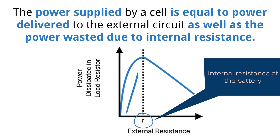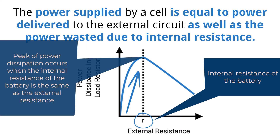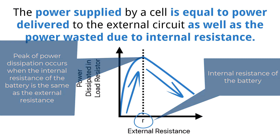This is visualized in a graph: as the load resistance increases, the amount of power dissipated also increases until it reaches a peak. The peak occurs at the same resistance value as the internal resistance of the cell. As the resistance in the circuit continues to increase, the power decreases, which follows our previous understanding of the relationship between power and resistance. When working with electronics, it becomes important to match the type of cell with the external resistance that it will power.